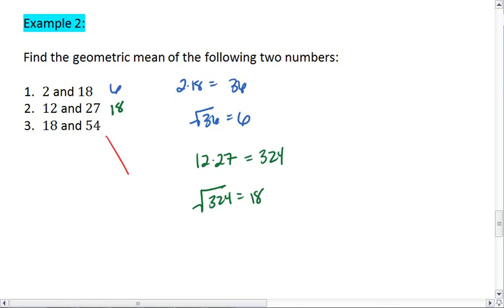Lastly, for 18 and 54, I want you to multiply 18 times 54. We get 972. Take the square root of 972. You get 31.18. Thus, the geometric mean of 18 and 54 is 31.18.